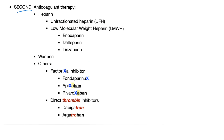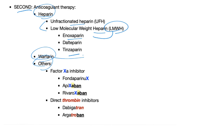Second, anticoagulant therapy. We have heparin, warfarin, and others. For heparin, we have two types: unfractionated heparin and low molecular weight heparin, such as enoxaparin, dalteparin, and tinzaparin. Warfarin is next, but you have to give heparin first — the heparin bridge — because in the beginning, warfarin is actually pro-coagulation. Others include factor Xa inhibitors such as fondaparinux.